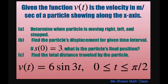Hi everyone. Given the function phi of t equals 6 sine of 3t is the velocity in meters per second of a particle moving along the x-axis, we're going to determine when the particle is moving left, right, and stopped, find the particle's displacement, find its final position, and the total distance traveled by the particle.